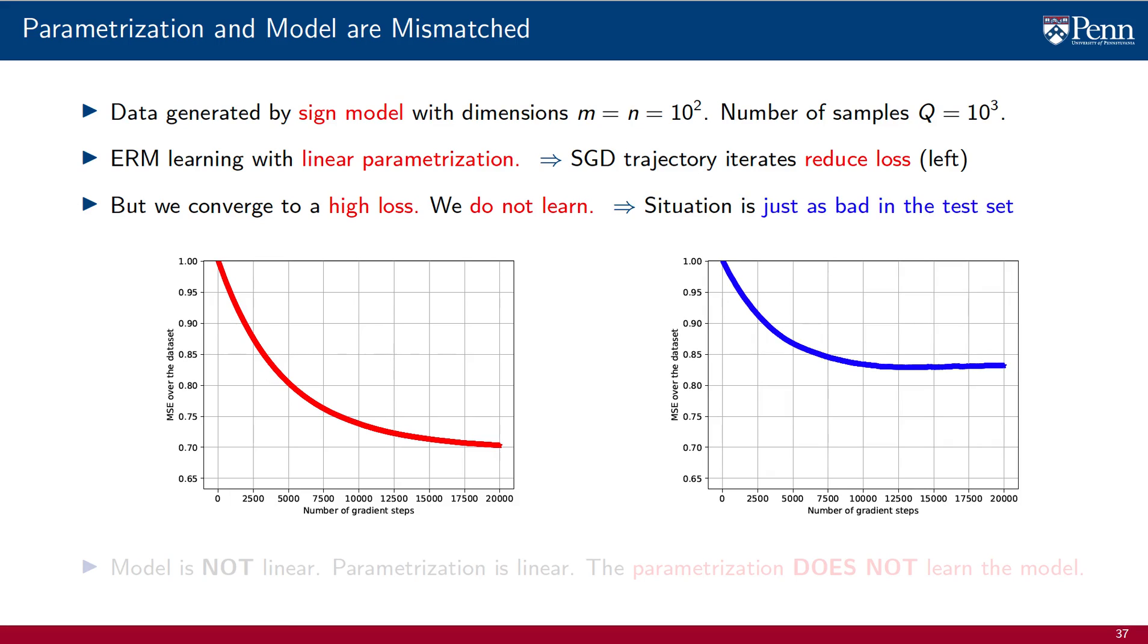When we look at operation outside the training set, the situation is just as bad. There is no reason to expect successful testing out of a failed training. Miracles just do not happen. And by the way, there is no mystery here either. The model is not linear. The parametrization is linear. Therefore, the parametrization does not learn the model. It just can't. There is a mismatch between the parametrization and the model.